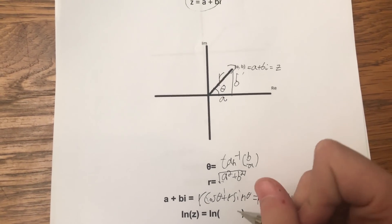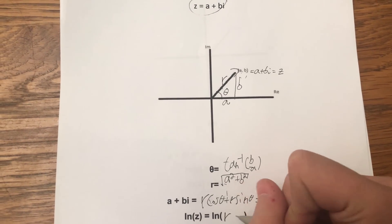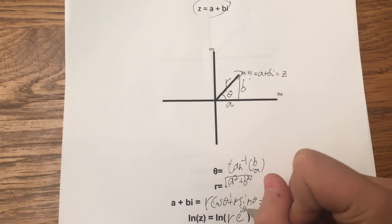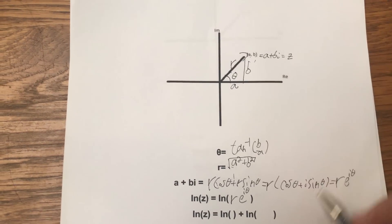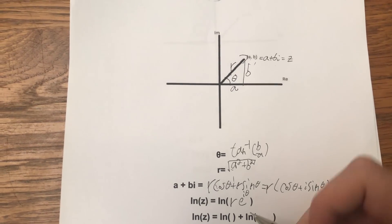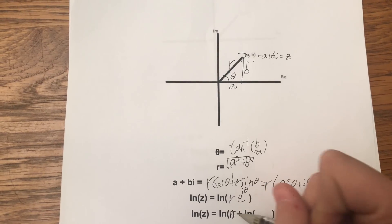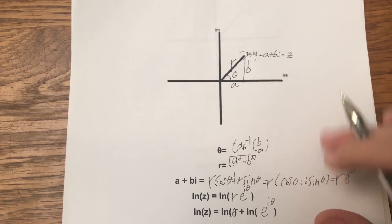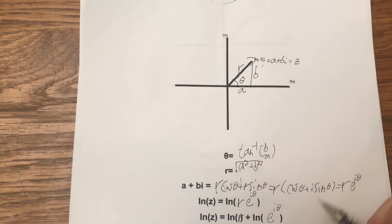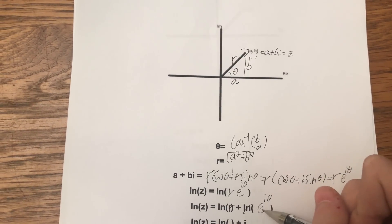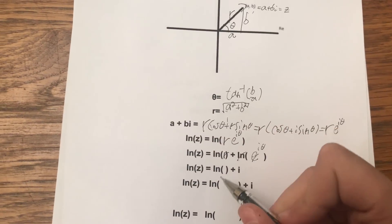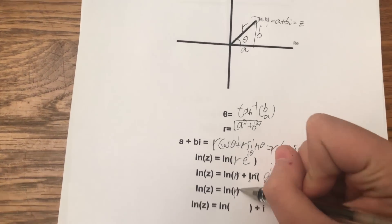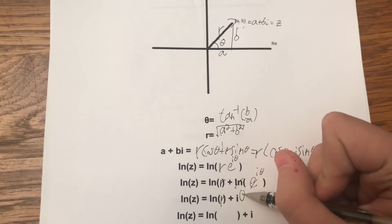So we can go back to our complex logarithm and plug our new information in: r e to the i theta. Now we can split it by one of the log properties - we can have ln of r and ln of e to the i theta. Next, the ln and the e cancel out, so we can have ln of r and i theta.